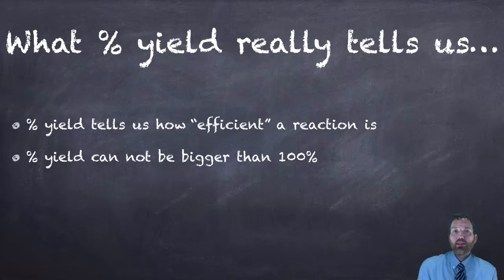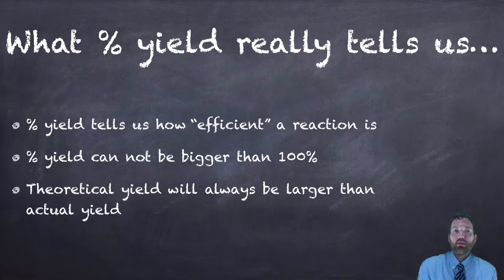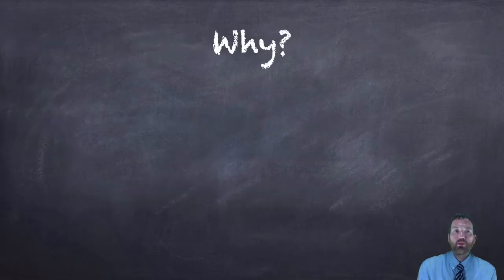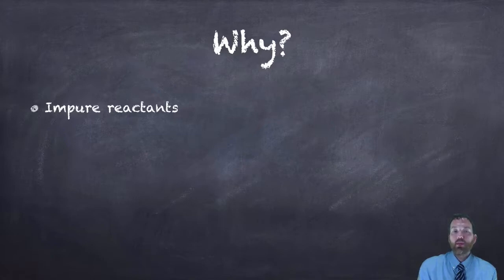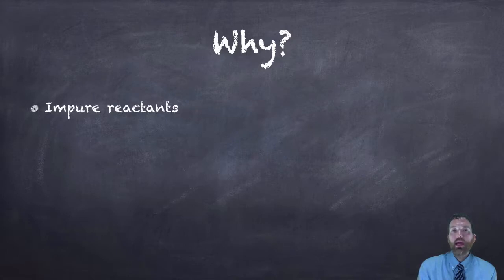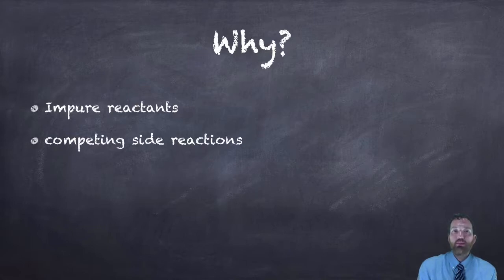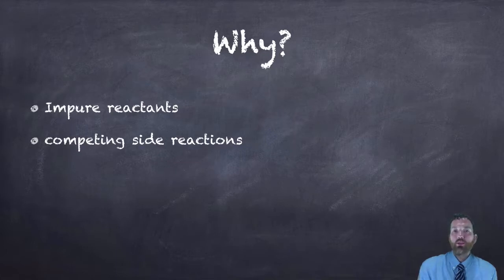48.8% actually isn't that bad. A percent yield can never be bigger than 100%, and it's usually never even close to 100%. The theoretical yield will always be larger than the actual yield, and there are some reasons for this. Number one is impure reactants — especially in the high school lab, the grade of chemicals we're working with is not as high as what a chemical engineer would use, so impurities may affect the reaction efficiency. We also have competing side reactions. In a double replacement reaction, for example, the competing side reaction makes aqueous products, taking energy away and leading to a lower percent yield.